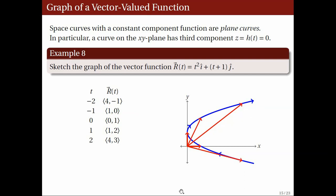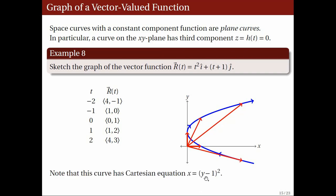This is indeed a parabola, and we can find its equation by eliminating the parameter t. We have the parametric equations x = t² and y = t + 1. Since y = t + 1, we have t = y − 1, and substituting into x = t², we get the Cartesian equation x = (y − 1)².